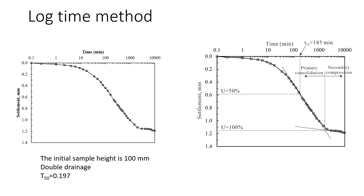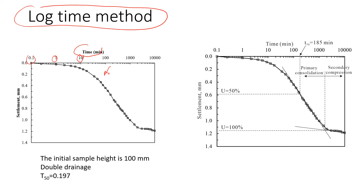We will start with the log time method, in which we draw time on a log scale. The curve has an S-shape — like a reverse S. For this particular test, it was a laboratory oedometer test with double drainage, and the initial height of the sample before applying any load was 100 millimeters.